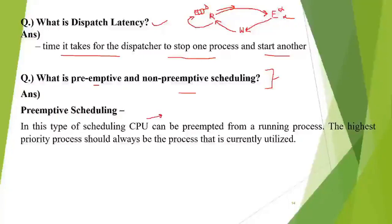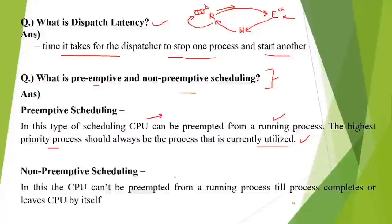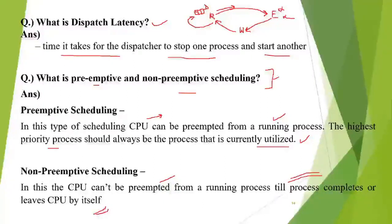In case of preemptive scheduling, the CPU can be preempted from a running process forcefully, and the highest priority process should always be the one currently utilizing the CPU. The CPU can be preempted from a running process while it is executing. Non-preemptive says that the CPU cannot be preempted from the running process until the process completes or leaves the CPU by itself. There are two situations: the process will complete itself, or it will leave the CPU because it requires some other resource, like an input device, and has to wait in the waiting state.